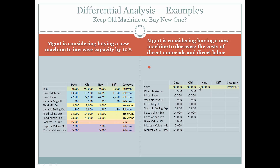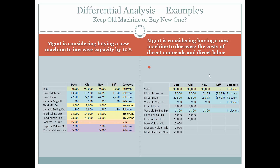With the new machine, sales will be the same because we are producing the same amount. Therefore, in this instance, since we're producing the same, those sales would be irrelevant. Direct materials and direct labor would be considered variable and relevant because the new machine is going to decrease those costs — there is a difference between using the old machine and acquiring the new one, so these costs are relevant in making the decision.